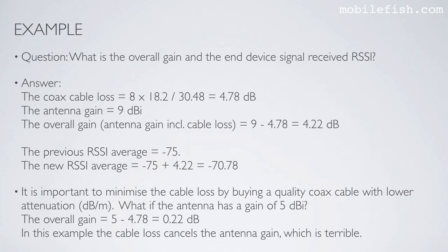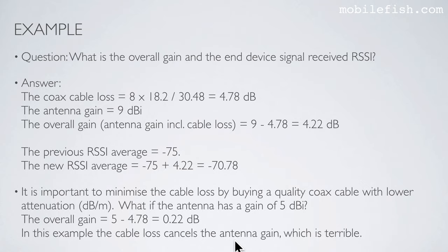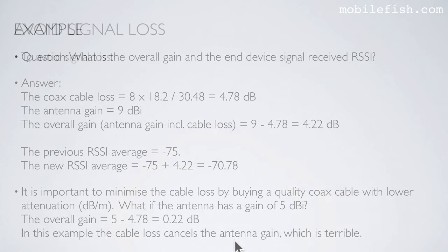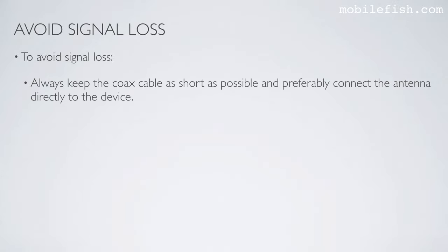It is important to minimize cable loss by buying a quality coax cable with lower attenuation. For example, if the antenna has a gain of 5 dBi instead of 9 dBi, the overall gain is 5 dBi minus 4.78 dB cable loss, which is only 0.22 dB. In this example the cable loss nearly cancels the antenna gain, which is terrible. To avoid signal loss, always keep the coax cable as short as possible and preferably connect the antenna directly to the device.